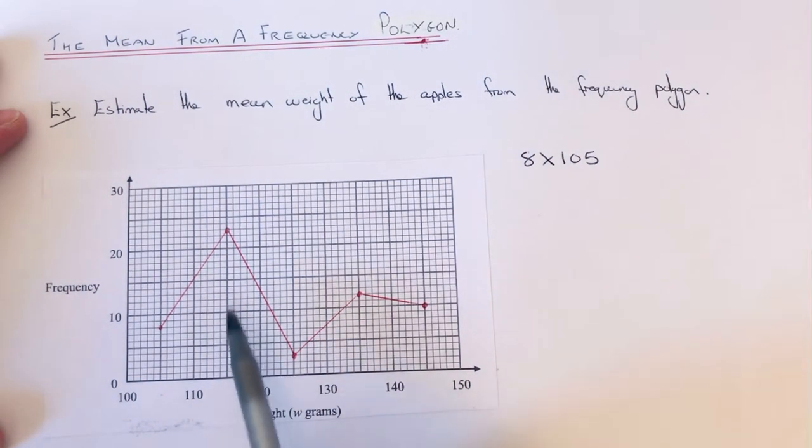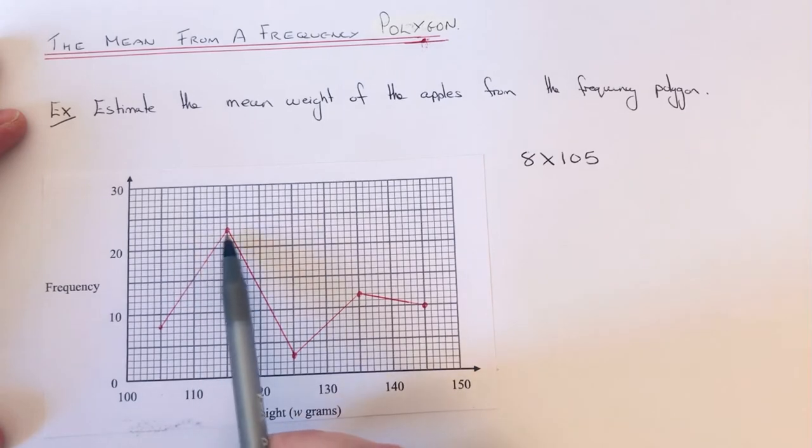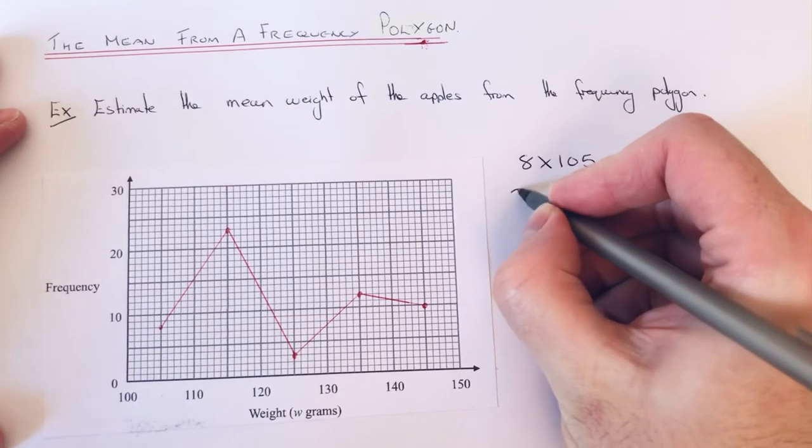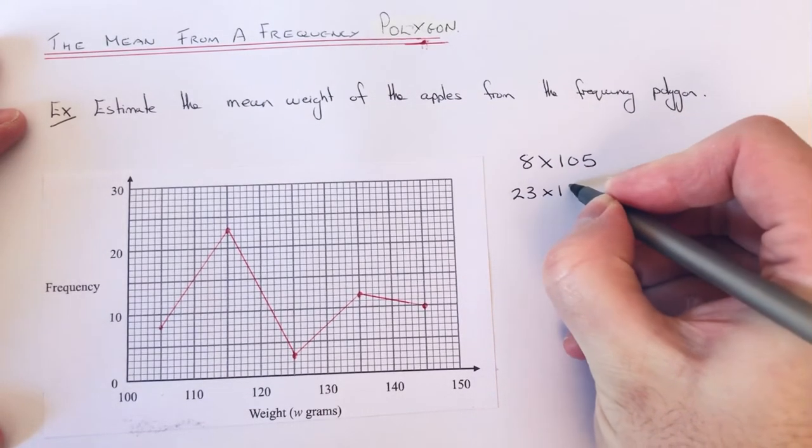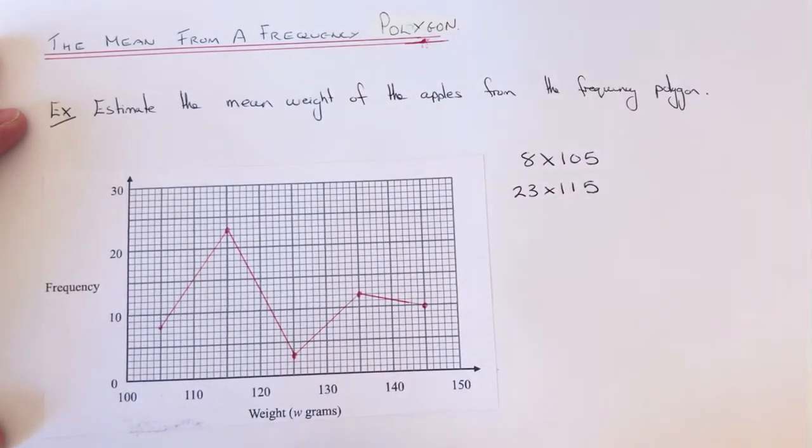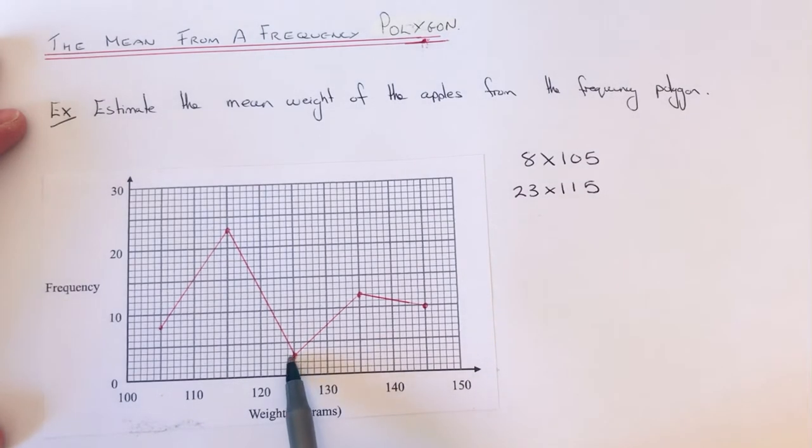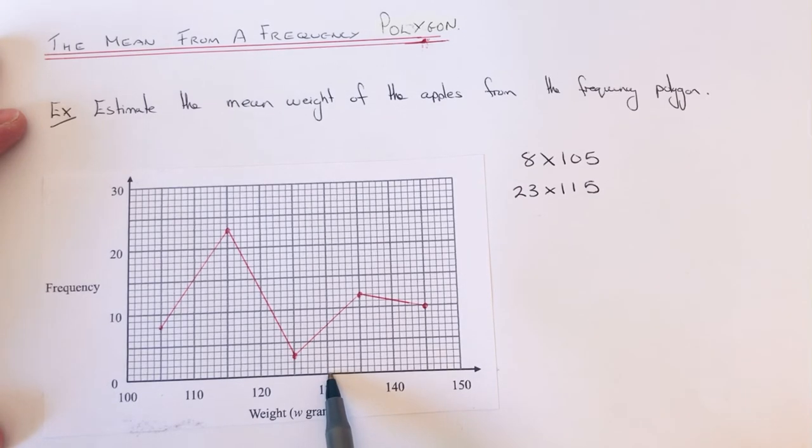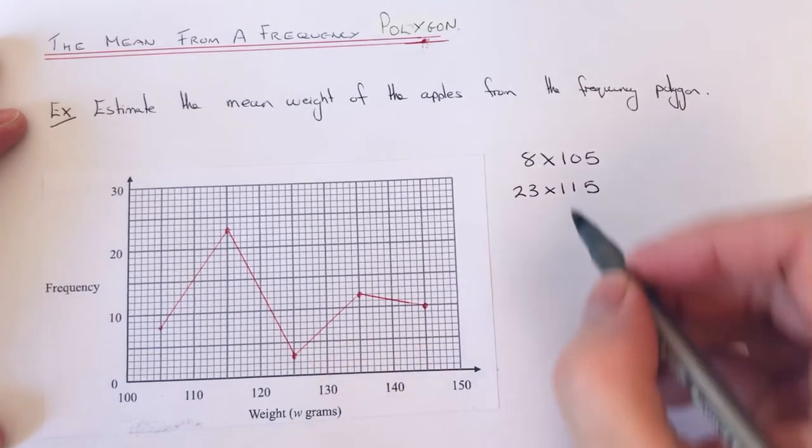Our next group we had 23 apples with a weight between 110 and 120, so 23 times 115. In our next group we had 3 apples which were between 120 and 130 grams, so 3 times 125.